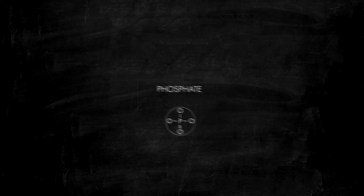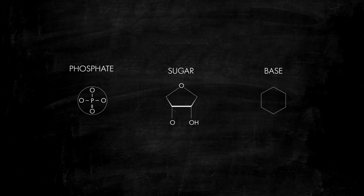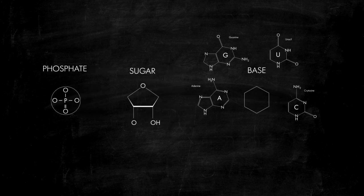A subunit of RNA is a phosphate molecule, a sugar molecule, and a base. There are four kinds of bases. We can label them with letters, A, G, U, and C.